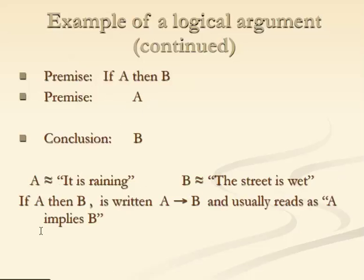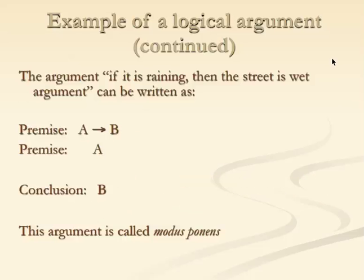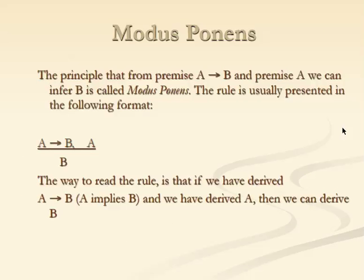We often write this as A with an arrow to B, meaning A implies B, or 'if A then B'. The argument is: we have a premise saying A implies B, and another premise saying A, and from these two premises we conclude B. This argument is called modus ponens — the principle that from a premise 'A implies B' and a premise A, we can conclude B.